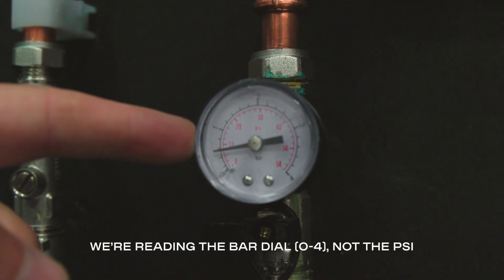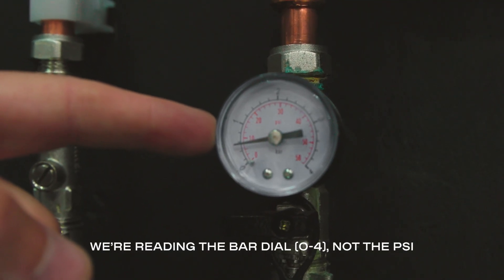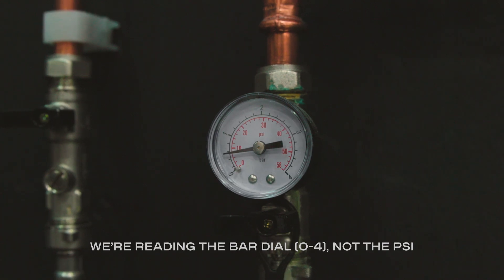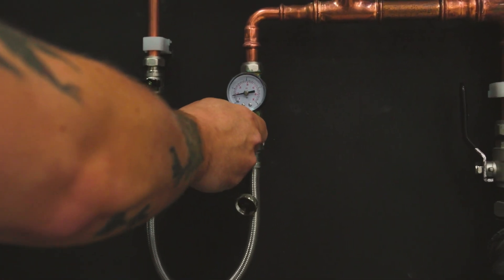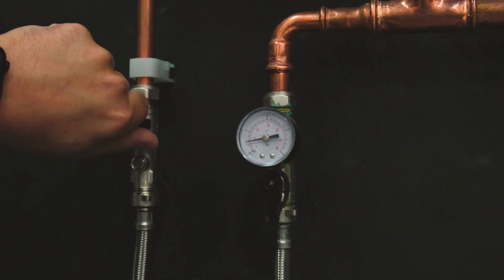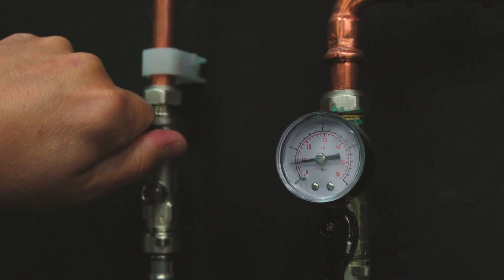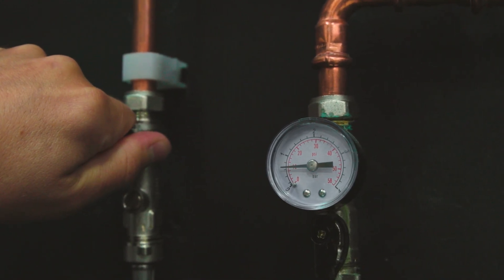If the pressure reads below one bar, like it does here, you need to repressurize your system. To do this, open the filling loop by turning this lever anti-clockwise to fully open, and open this second lever steadily to pressurize the system.